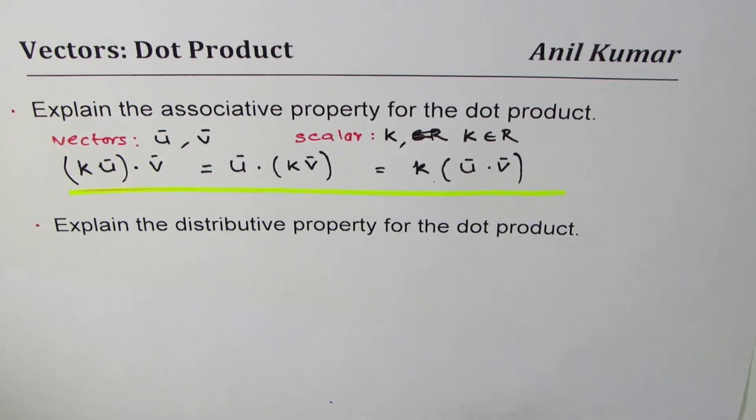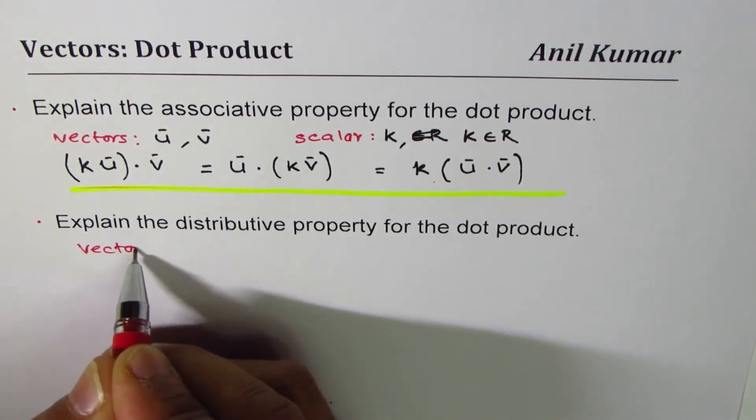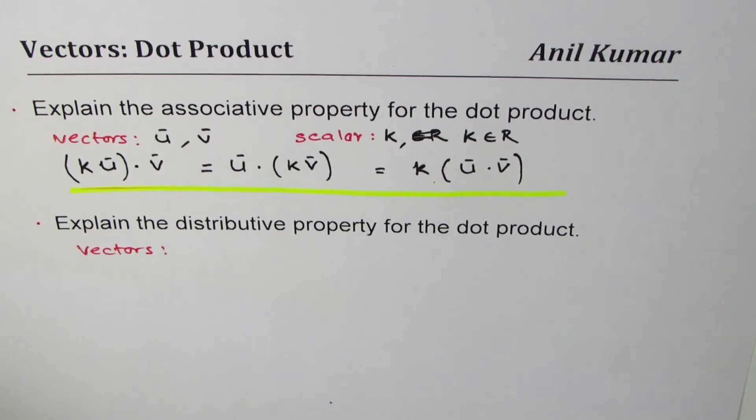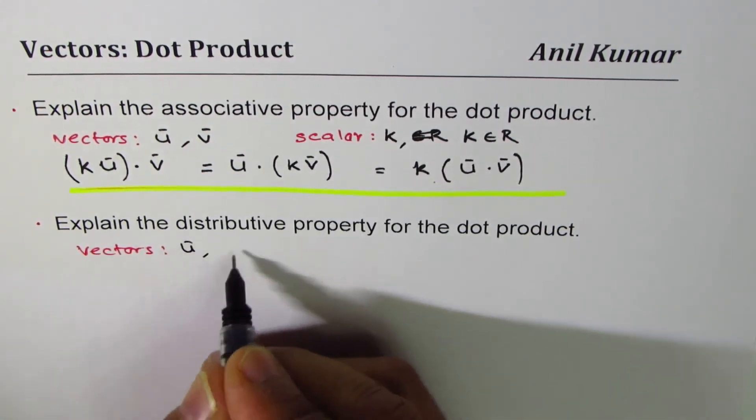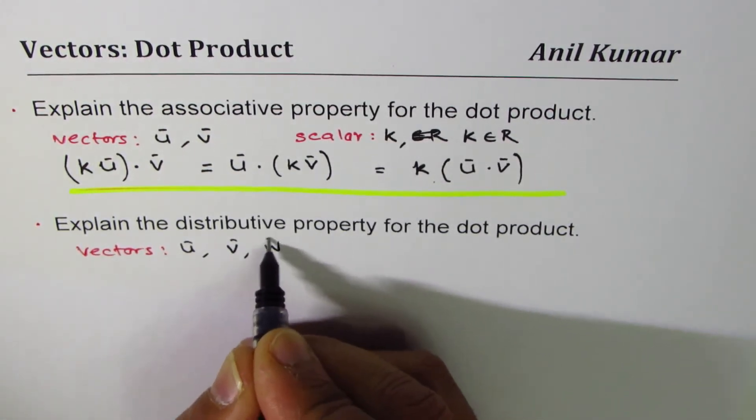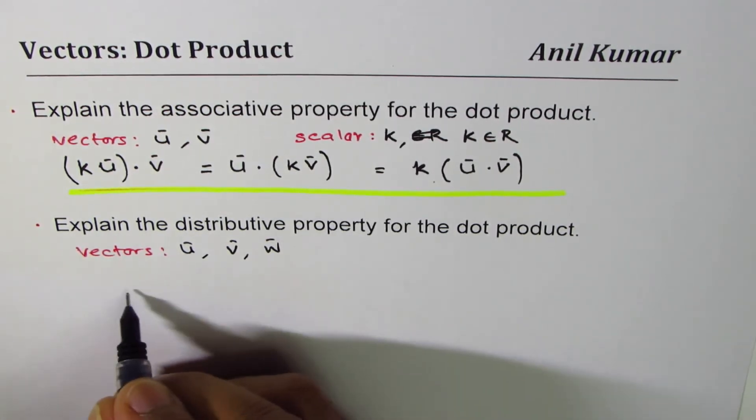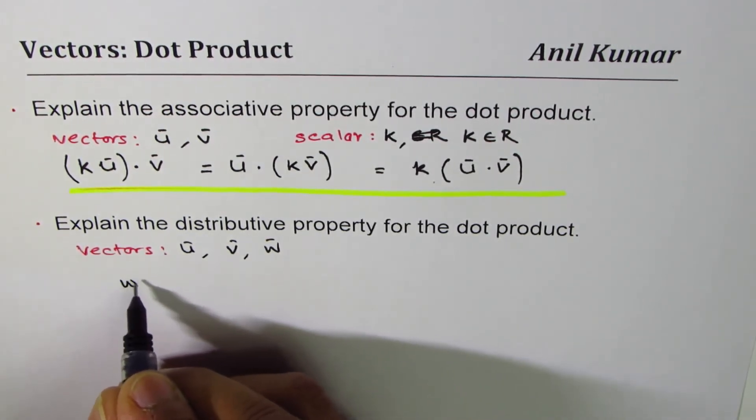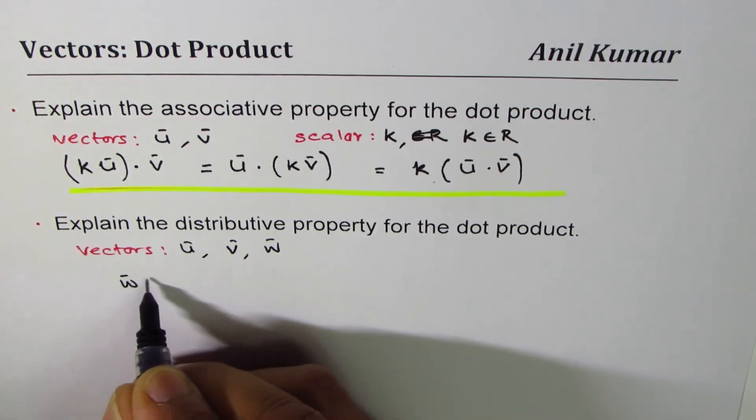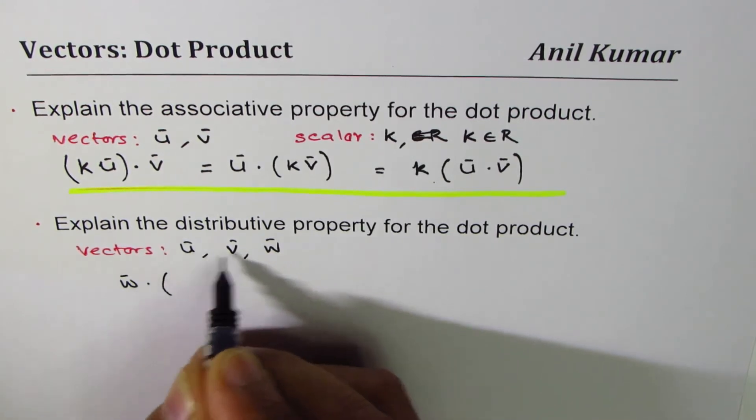Now let's talk about distributive property. In case of distributive property, we have just vectors. So we have vectors, and let us say the vectors are u, v, and w.